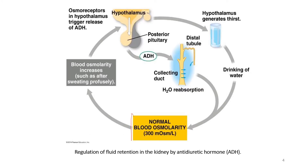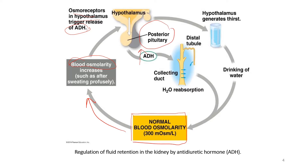Normal blood osmolarity is at 300 milliosmol per liter. If there is an increment in blood osmolarity, such as after sweating profusely, it will cause the osmoreceptors in the hypothalamus to trigger the release of ADH by the posterior pituitary. The increment of ADH signals the collecting duct to increase water reabsorption, causing the production of concentrated urine.